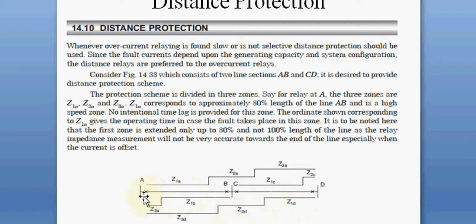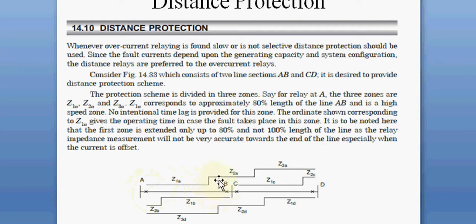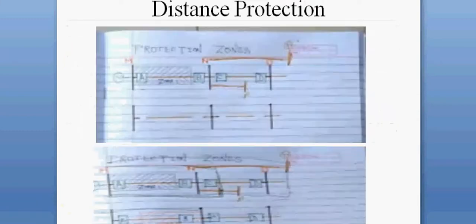For relay A, Zone 1 covers 80% of the length of line AB. Zone 2 of relay A covers the remaining 20% of line AB and also covers an extra 20% or 50% of the adjoining line.